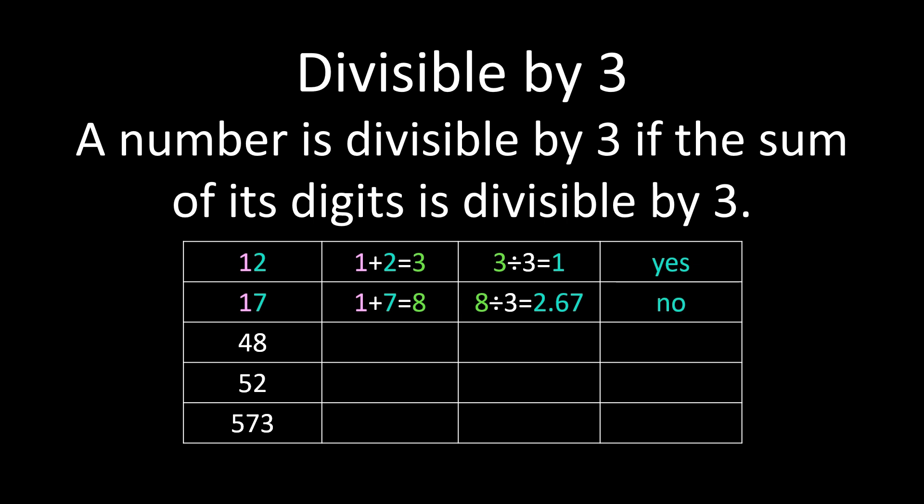We can do the same thing with 48. 4 plus 8 is 12. And 12 divided by 3 is 4, so 48 is divisible by 3. Now notice, we're not getting the answer for 48 divided by 3. We're just determining if the number 48 itself is divisible by 3. Looking at 52, we're going to add the digits, so 5 plus 2 is 7. 7 divided by 3 is not a whole number, so 52 is not divisible by 3.